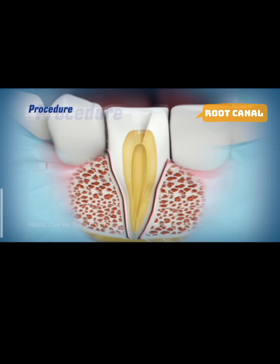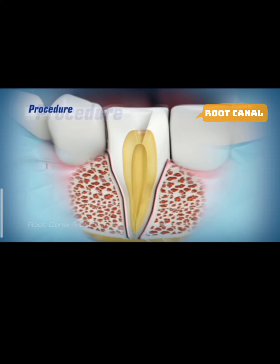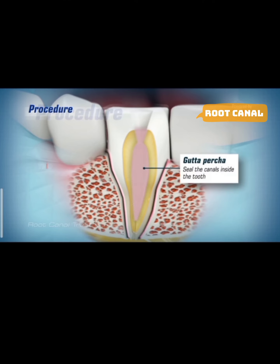Once the entire tooth is completely cleaned, it is dried with tiny absorbent paper points. After the canals have been dried, they are filled with a rubber-like substance called gutta-percha. The purpose of this filling material is to seal the canals inside the tooth.